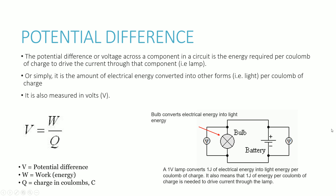If you take a look at the diagram on the right, let's look at this bulb. The bulb will convert electrical energy into light energy. A one-volt lamp means that one joule of electrical energy is converted into light energy per coulomb of charge. In other words, it also means that one joule of energy per coulomb of charge is required to drive the current through this particular light bulb.